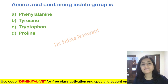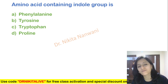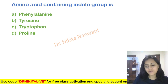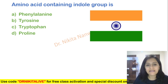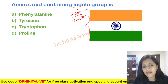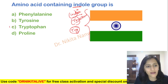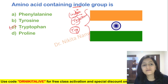So the first one: the amino acid containing the indole group — is it phenylalanine, tyrosine, tryptophan, or proline? The easy trick to remember: from 'indole,' take I-N-D, that is 'India,' and this is India's tri-color flag — that is 'tri.' So indole group, I-N-D, gives 'try,' that is T-R-Y, that is tryptophan. Remember, tryptophan contains the indole group.